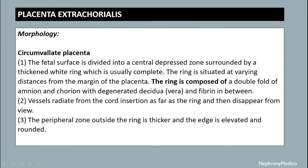The ring is situated at varying distance from the margin of the placenta. The ring is composed of a double fold of amnion and chorion with degenerated residue and fibrin in between. Vessels radiate from the cord insertion as far as the ring and then disappear from view. The peripheral zone outside the ring is thicker, with an elevated and rounded edge.